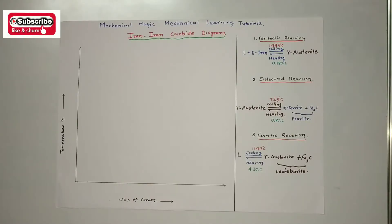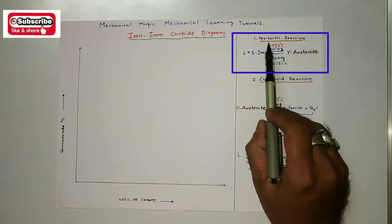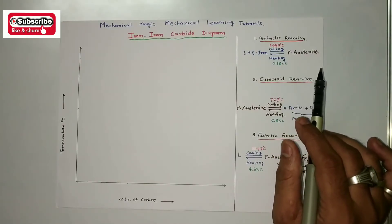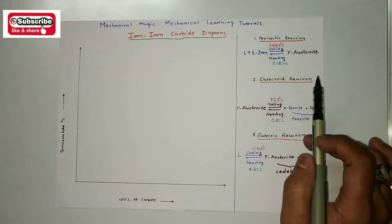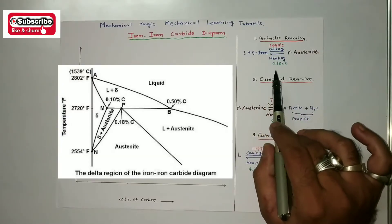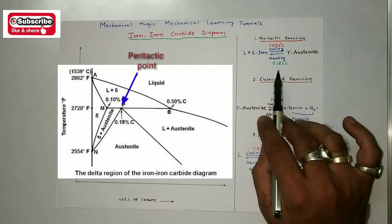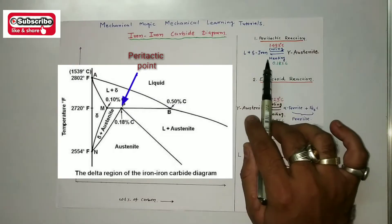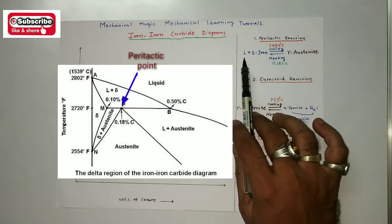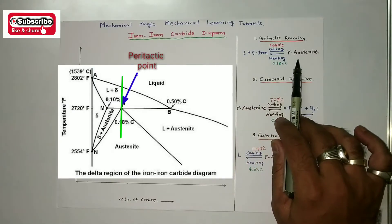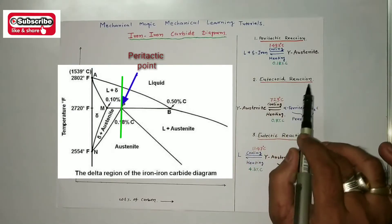The first important point is the peritectic reaction. The peritectic reaction takes place at higher temperatures, around 1493 degrees centigrade, with a low amount of carbon — 0.18 percentage of carbon. In the peritectic reaction, liquid plus delta form of iron converts into gamma austenite, which is a soft phase.